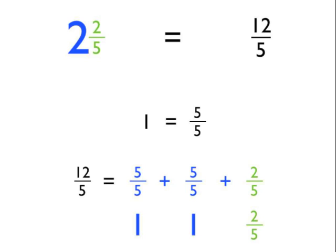So in the mixed number, we've got two as the whole number part. And then what was left over, we needed to add on the two fifths. So as a mixed number, twelve fifths is two and two fifths.